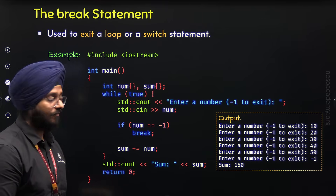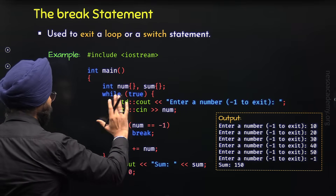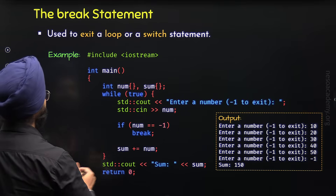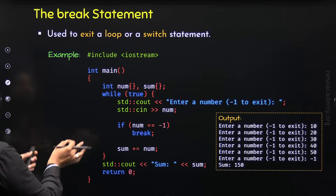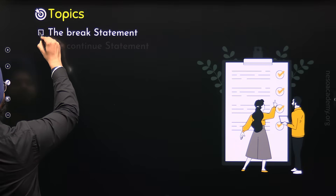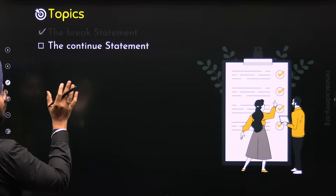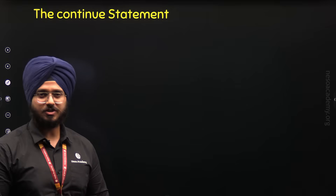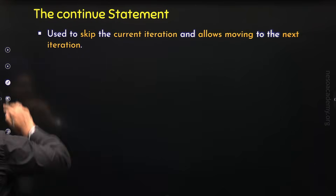I hope this is clear to you. So with the help of a break statement, we can terminate an infinite loop — a loop which will not terminate on its own. So it is quite useful. With this, we have understood the break statement and we are done with the first topic. Now let's move to the second topic to understand the continue statement. The continue statement is used to skip the current iteration and it allows us to move to the next iteration.